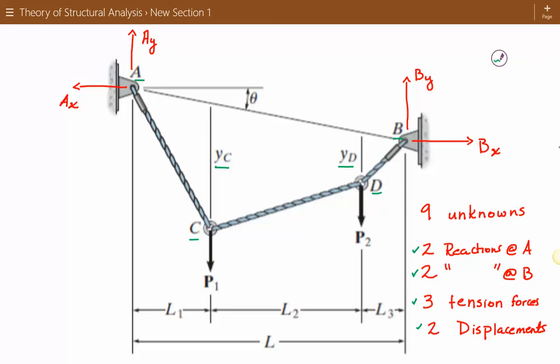The steeper the section, the greater the amount of tension in that section. So for this figure, AC would have the largest amount of tension.